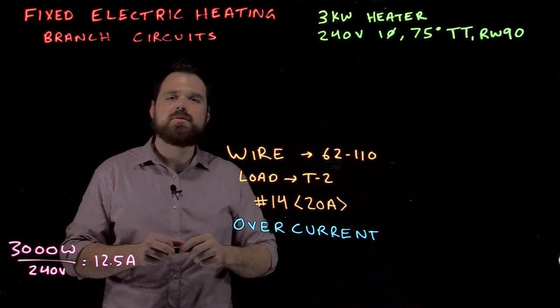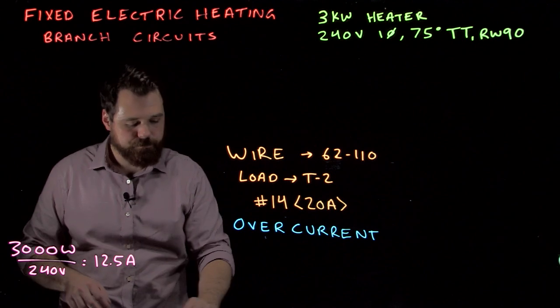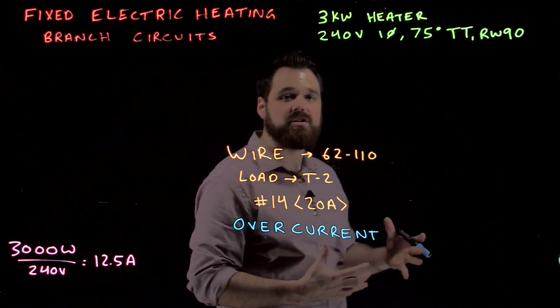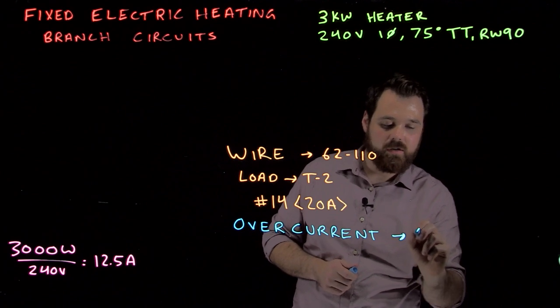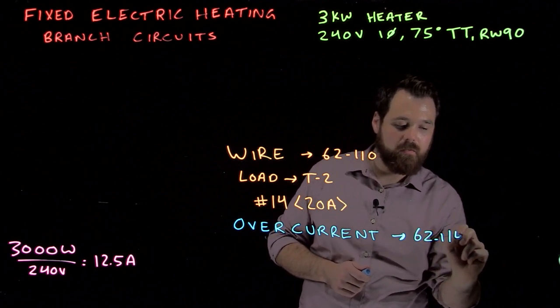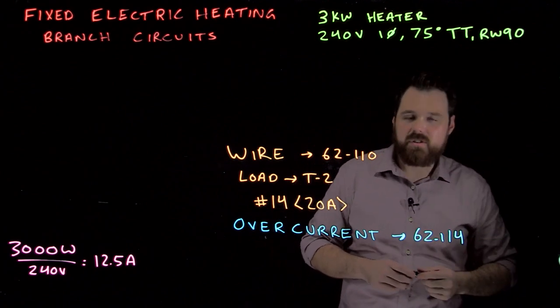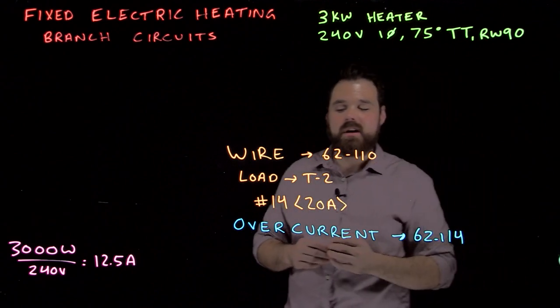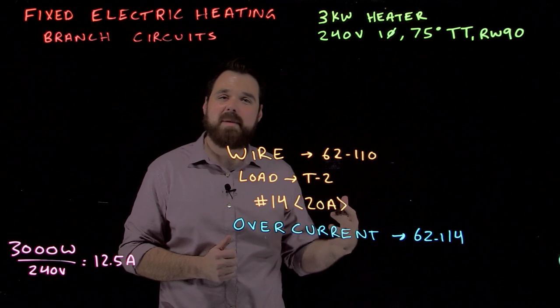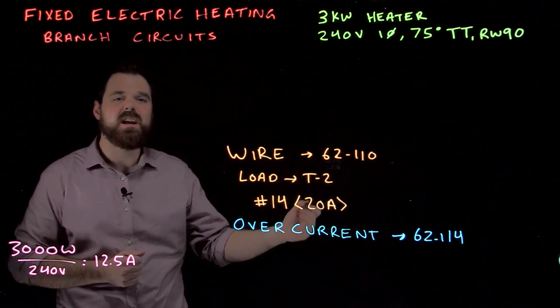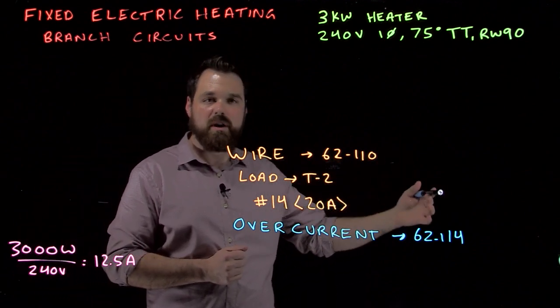Then we are going into sizing our overcurrent device. What we do, we are back into section 62, we are going to go down to 62-114. Now 62-114 tells us if you have an overcurrent device, your allowable ampacity of your conductor cannot exceed 80% the rating of the breaker.